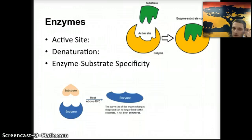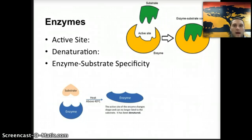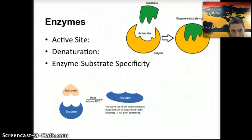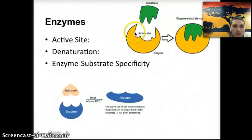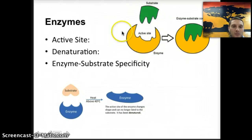Enzymes and substrates are very closely tied to one another. They have a specificity, meaning that enzymes can only catalyze one biochemical reaction — only one enzyme can fit with a substrate. Enzymes have a particular physical shape but also a polarity charge, which limits the type of substrate that can bind with it. So only one substrate and one enzyme can actually bind together.